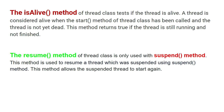So let's discuss how they work with examples. The isAlive() method of the Thread class tests if the thread is alive. A thread is considered alive when the start() method has been called and the thread has not yet died. This method returns true if the thread is still running, otherwise it returns false.